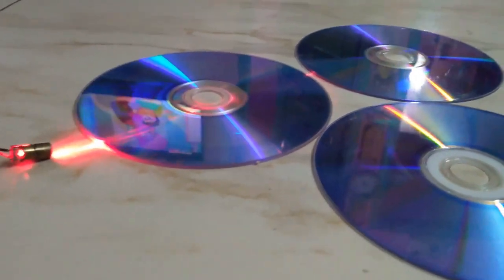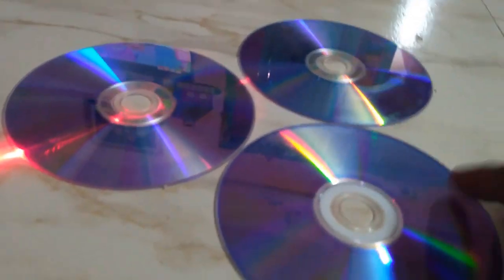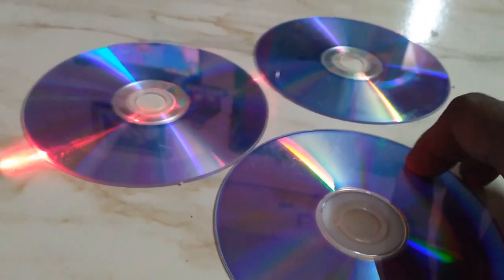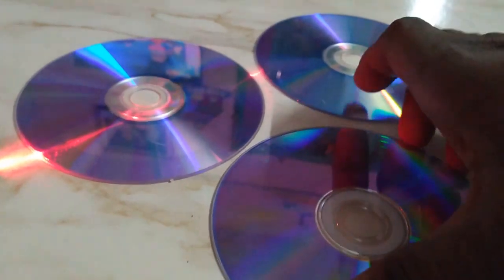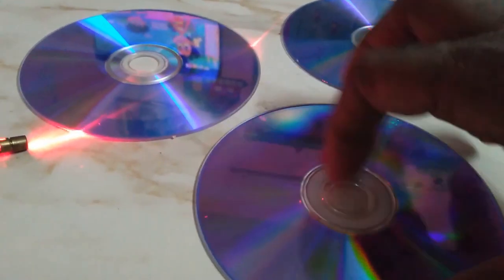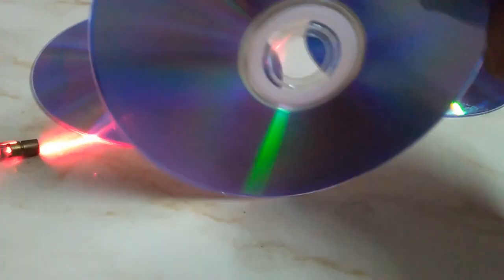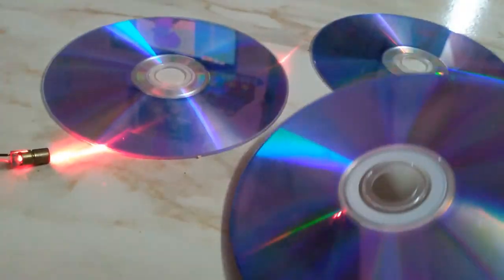The CD data is stored in tracks and sectors which consist of pits and lands. The digital information is stored in the CD in the form of closely spaced rows, and these rows act like a reflecting diffraction grating.